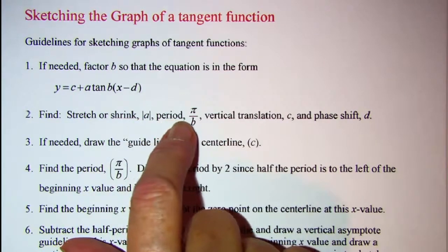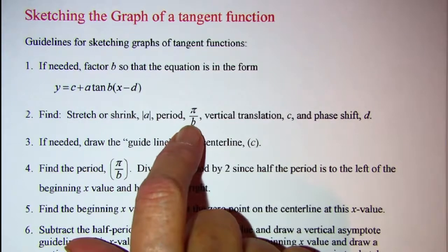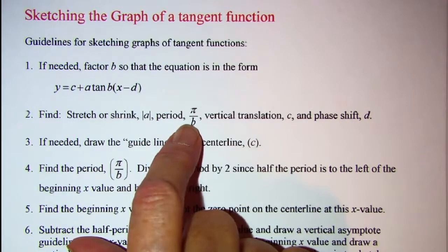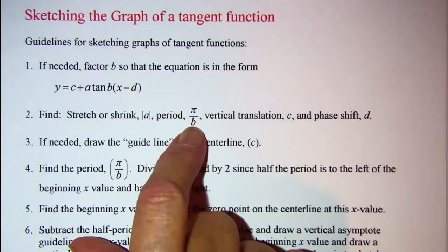Also we want to find the period which is π over B. Remember that the period of the basic tangent function is π, so the period of our tangent function when we have a B value has to be calculated with this formula.